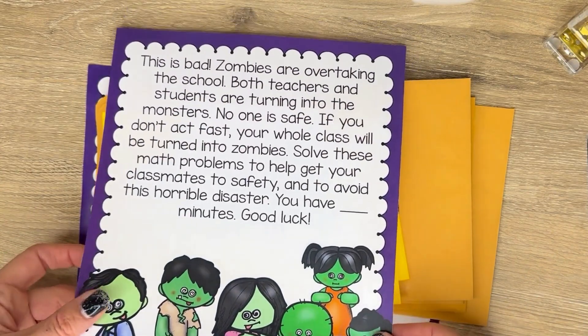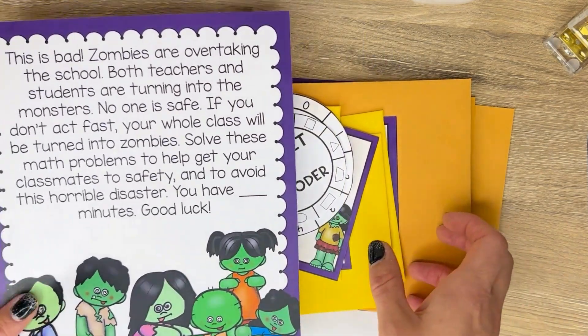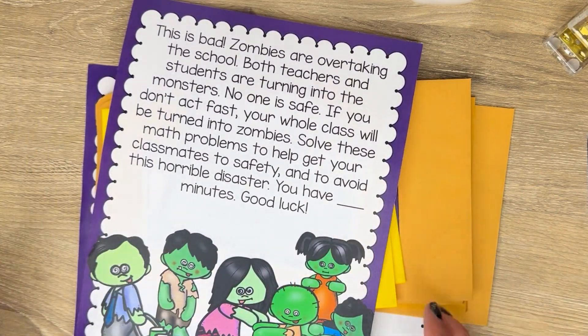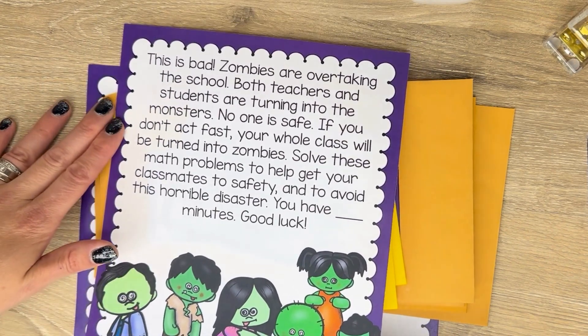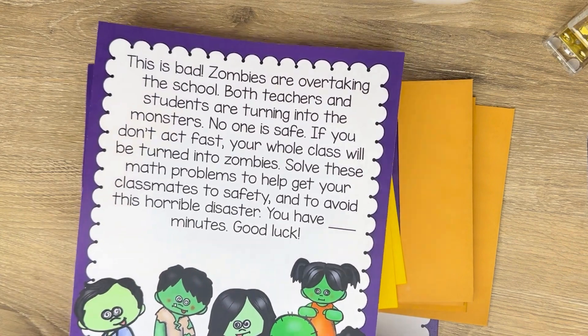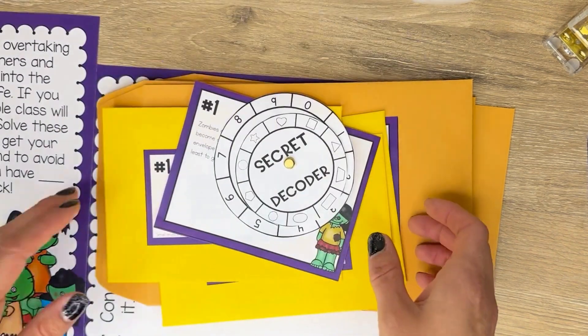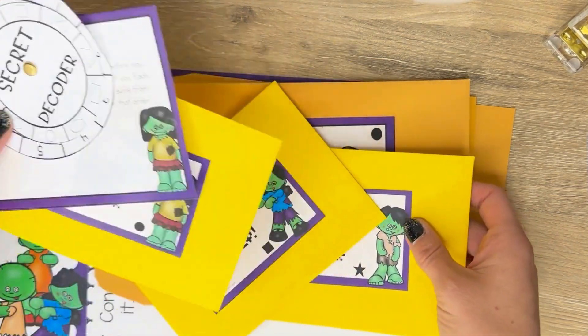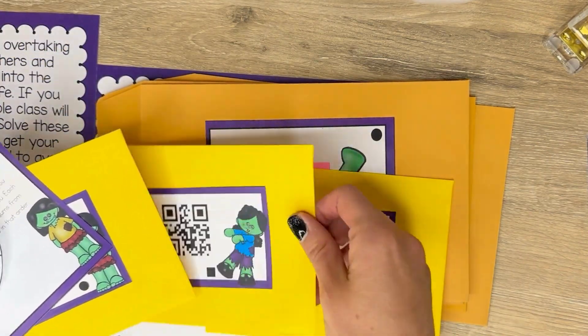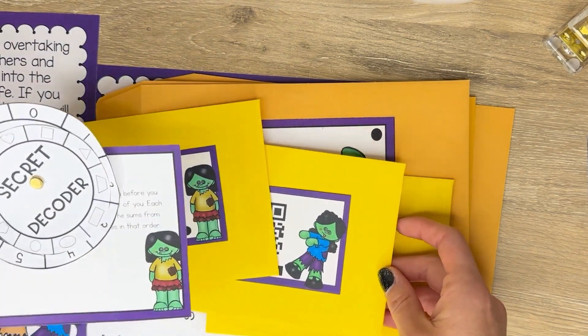Escape room games are a great way to get kids excited about learning while reviewing content. As a teacher, after I've already cut everything out and put it together, it's now time to put the clues around the room. The students start with the story outline that gets them set up for the escape room. Then they have their first clue and their different clue cards. They don't have to have the QR codes on them, but that just is another element that makes this fun.